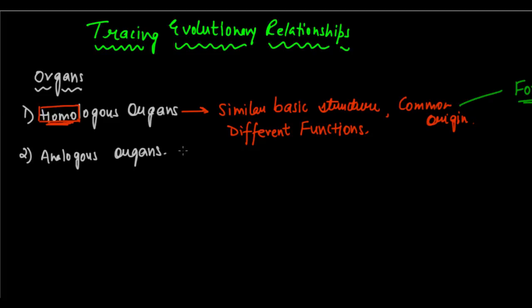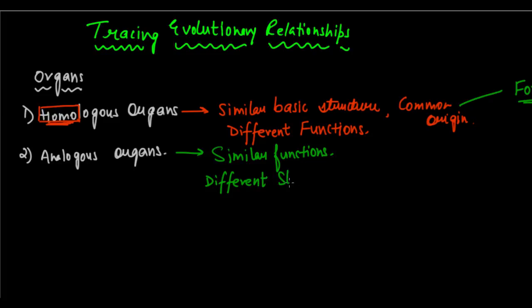Next we come to analogous organs — the exact opposite of homologous organs. Analogous organs are those organs that have similar functions but different structure and origin. So when organs have similar functions but different structures and origins, we classify them as analogous organs.